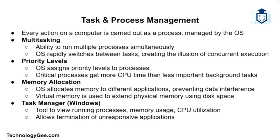The operating system switches between tasks rapidly, giving the illusion that they are running concurrently. It also assigns priority levels to processes, ensuring that critical system processes get more CPU time than background tasks. Additionally, the operating system assigns memory space to different applications and ensures they don't interfere with each other's data. It also uses virtual memory to extend physical memory using disk space. A tool like Task Manager in Windows allows you to view running processes, memory usage, CPU utilization, and terminate unresponsive applications.